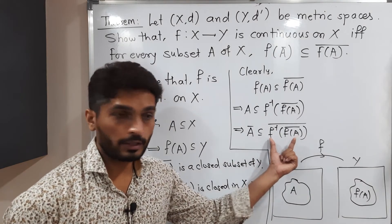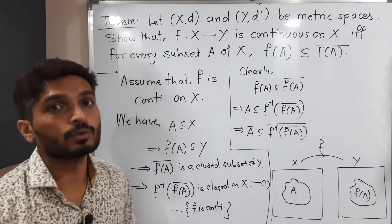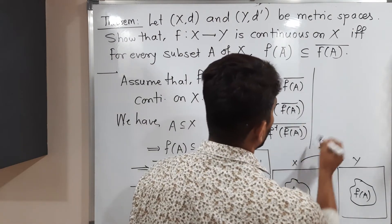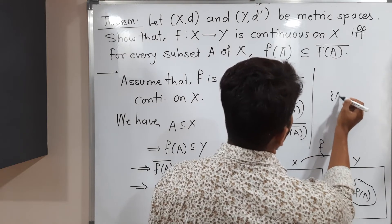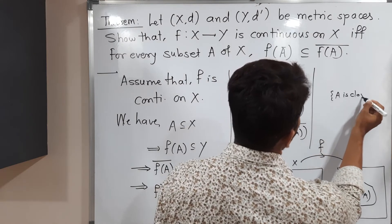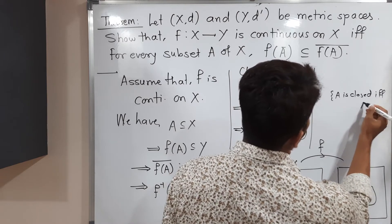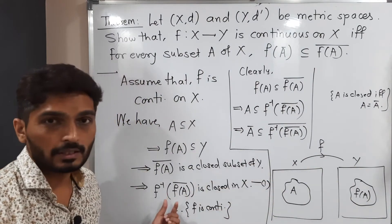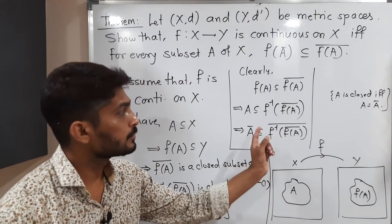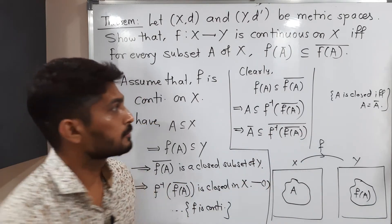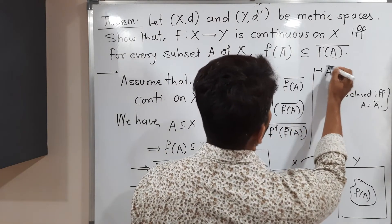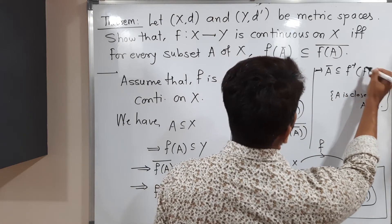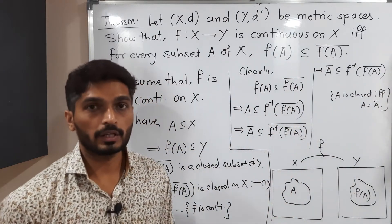But the set f⁻¹(f(A̅)) has already been shown to be a closed set from Statement 1. We know that a set is closed if and only if it equals its own closure. So taking the closure of a closed set gives the same set. Therefore Ā ⊆ f⁻¹(f(A̅)) — the bar on that term vanishes.